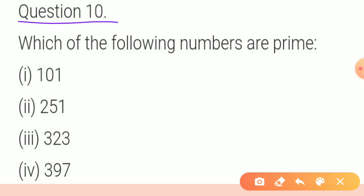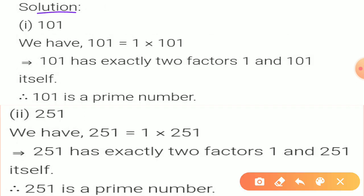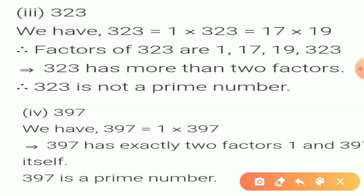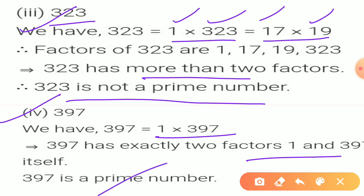Question 10: which of the following numbers are prime? 101 has only two factors — 1 and 101 — so it is a prime number. 251 also has only two factors, so it is also prime. 323 has four factors: 1, 17, 19, and 323 — more than two, so it is not prime. The fourth number has only two factors, so it is a prime number.